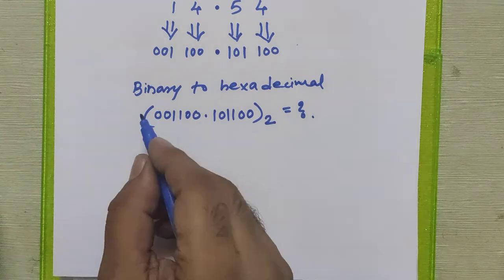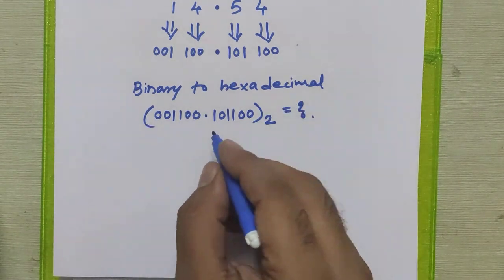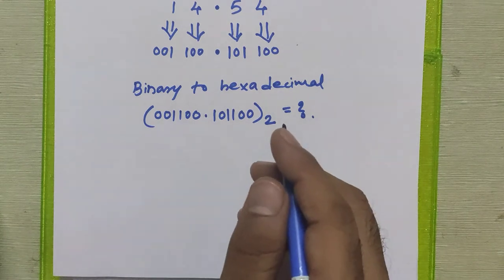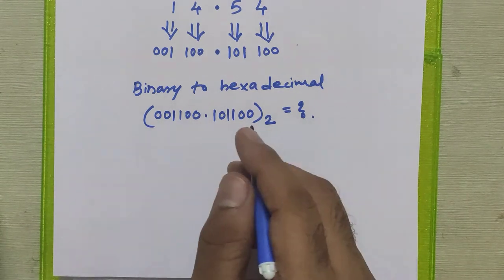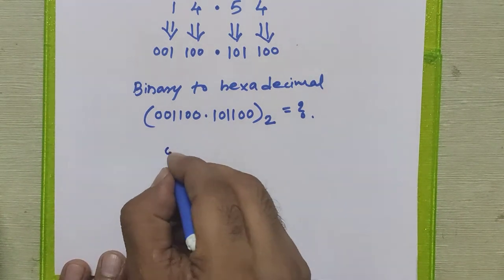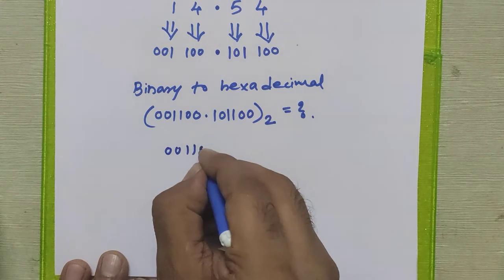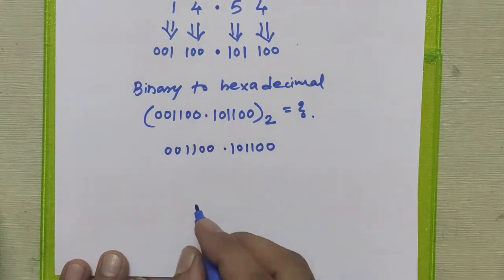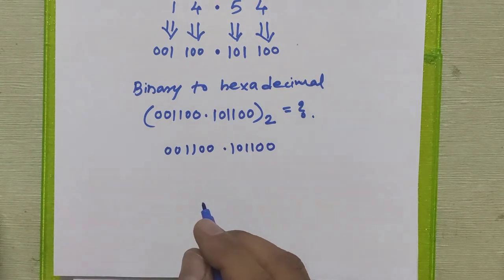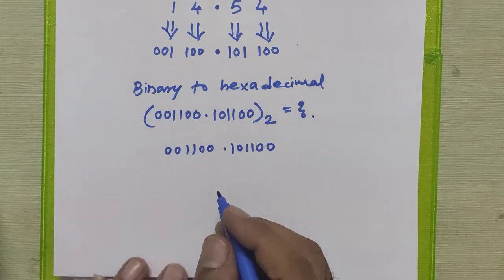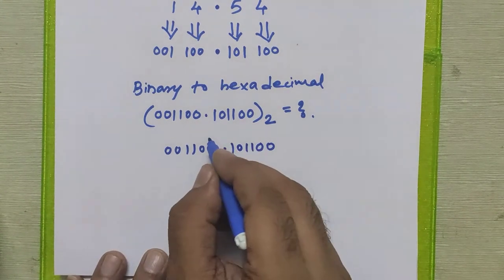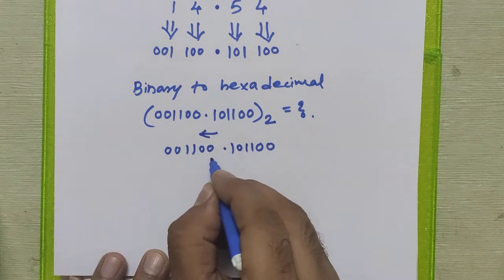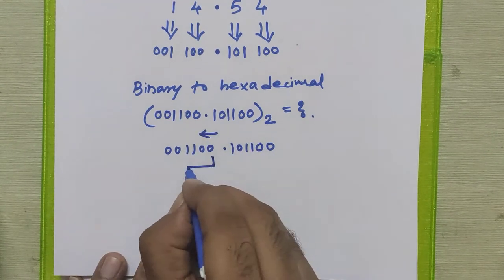To convert any binary number to hexadecimal we need to form a group of 4 binary bits and then write its equivalent hexadecimal number. We know how to form the group for the integral part and fractional part. For the integral part we go from right to left and form a group of 4 binary bits.